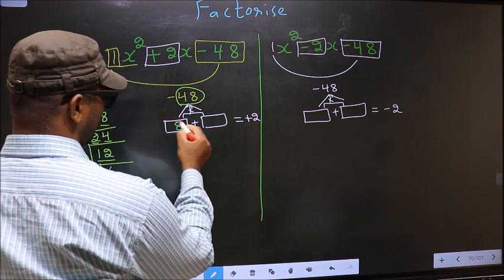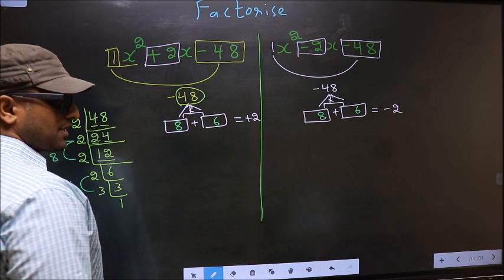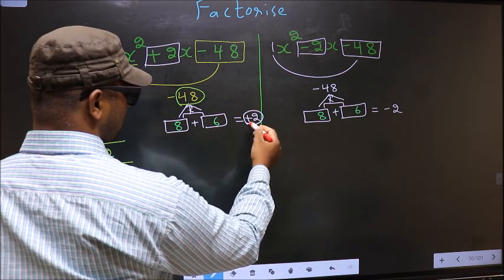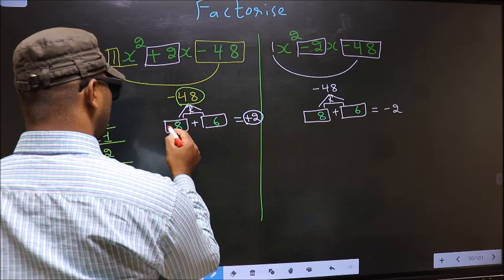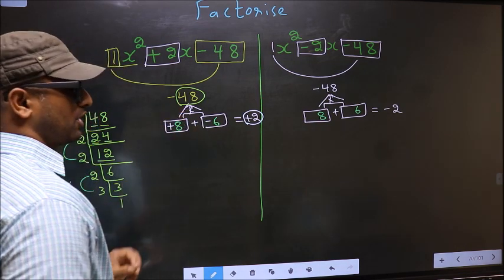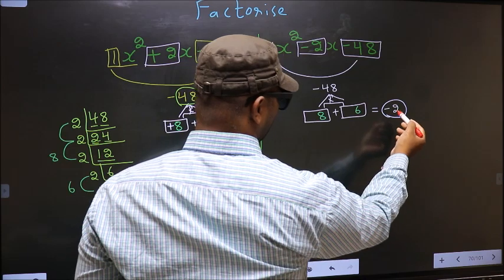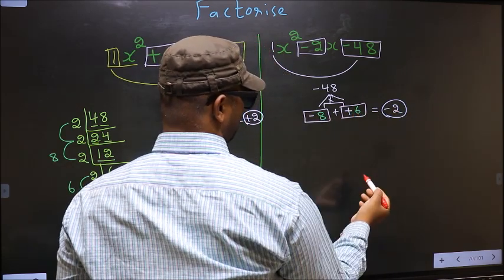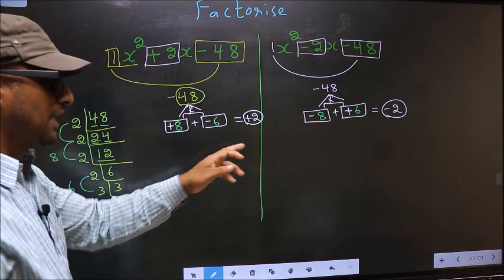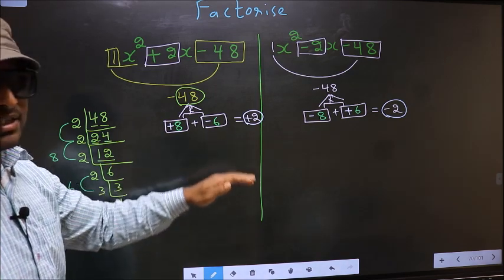So here you write 8 and 6, and over here also 8 and 6. Now the difference comes while adjusting the signs. For the first expression we have plus 2, so we put plus 8 and minus 6: plus 8 minus 6 is plus 2, and plus 8 into minus 6 is minus 48. For the second expression we need minus 2, so we place minus 8 and plus 6: minus 8 plus 6 is minus 2, and minus 8 into plus 6 is minus 48. The difference between the two is while adjusting the signs — the rest is the same.